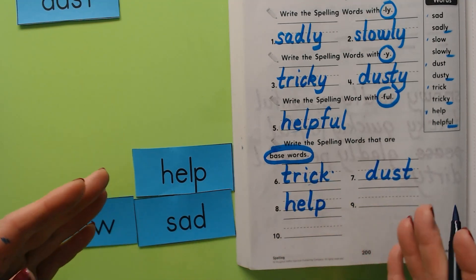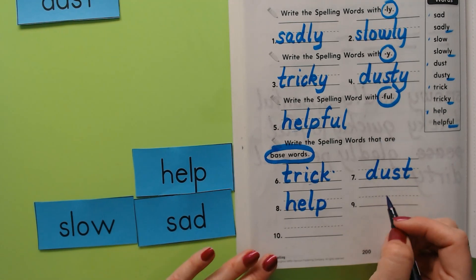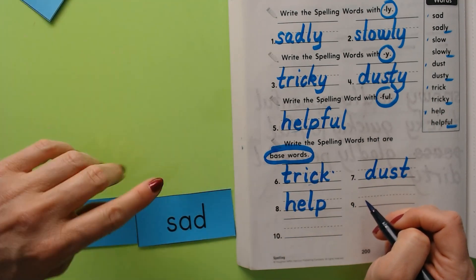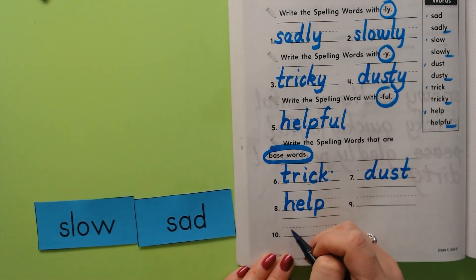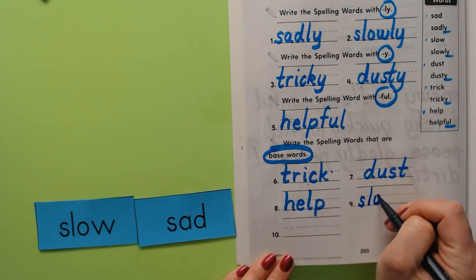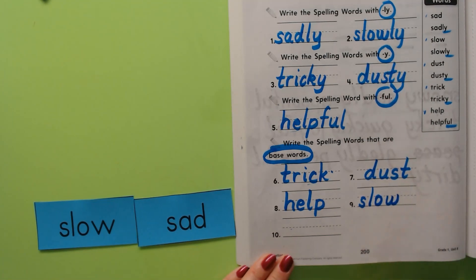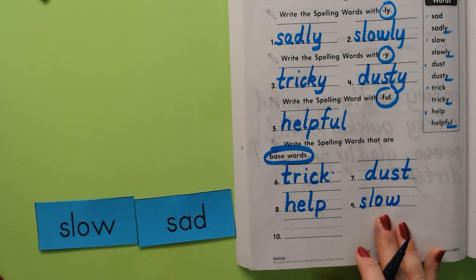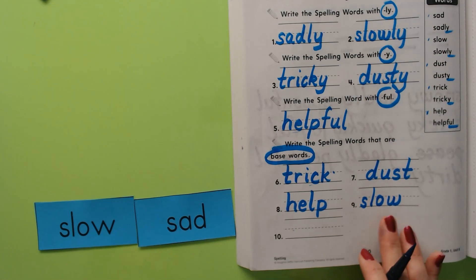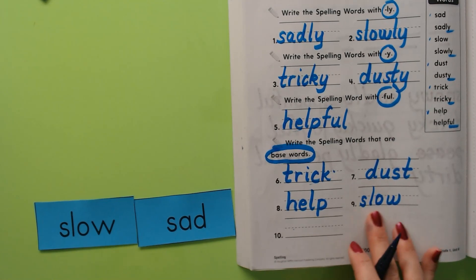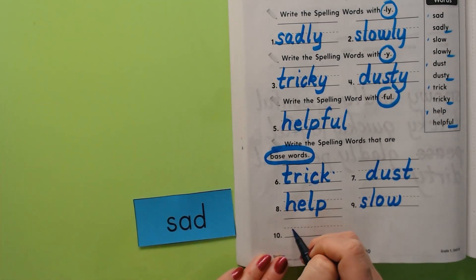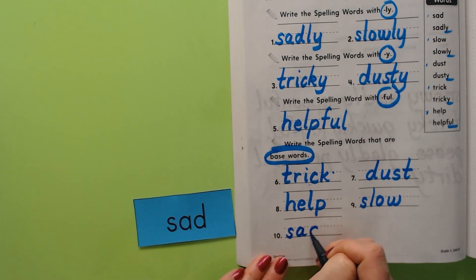Base words don't have suffixes or prefixes. Prefixes are word parts that go in the beginning. So we're done with help. How about slow — S, L, O, W. We actually did slow in lesson 27 when we were doing slow, slower, slowest. So you should know how to spell slow. And finally, sad.